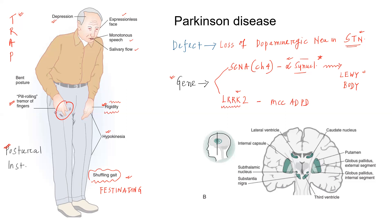Now let us have an overview of the basal ganglia structures. In this image you can see the caudate nucleus, which is present near the lateral ventricle, then the putamen, then the globus pallidus. Globus pallidus has two segments — internal and external. Both putamen and globus pallidus together are known as lentiform nucleus because of their lens shape, with the putamen on the outer side and globus pallidus on the inner side. We also have the subthalamic nucleus just below the thalamus and the substantia nigra in the midbrain. These are all the components of basal ganglia. In Parkinson's disease, the substantia nigra dopaminergic neurons are predominantly affected.